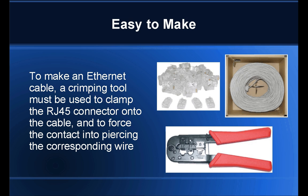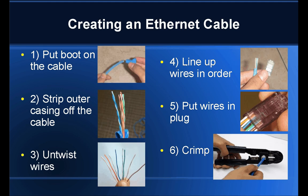If you look at your crimper, you'll notice there's an 8P slot for your RJ45 connector and a 6P slot for your RJ11 connector. There are six steps involved for creating your ethernet cable: first, put the boot on the cable; then strip the outer casing off; then take the four twisted pairs of wires and untwist them; line them up in the order for the type of cable you want to make, whether it's a crossover or straight-through patch cable; then put the wires in the plug and crimp the plug down, which will stab the different pins into the corresponding contacts or conductors.